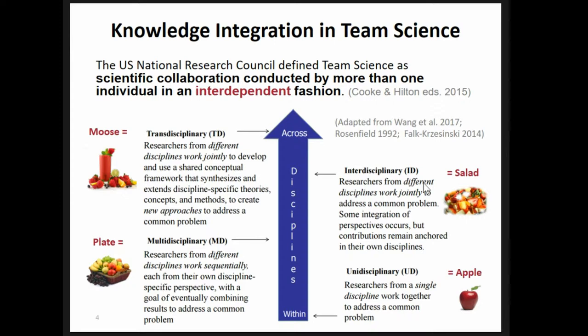When talking about knowledge integration in team science, the US National Research Council defined team science as scientific collaboration conducted by more than one individual in an interdependent fashion. There are four different stages of collaboration in the level of knowledge integration. The first is a unidisciplinary project — researchers from a single discipline like archaeology working together to address a common problem, like a NAPO. For a multidisciplinary project, researchers from different disciplines work sequentially, each from their own discipline-specific perspective — like a fruit plate. For an interdisciplinary project, like a fruit salad, researchers from different disciplines work jointly to address a common problem.